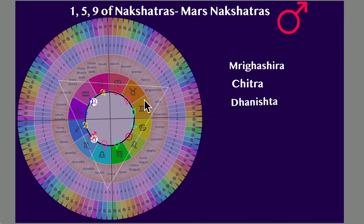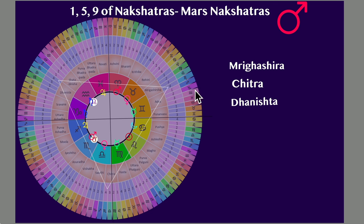The Mars nakshatras go between Taurus and Gemini, Virgo to Libra, and Capricorn to Aquarius — going from earth to air signs in every case. In the first two padas it goes in earth sign, then going into air sign. There is no exaltation really. But let's see the core characteristics of all three of these nakshatras.